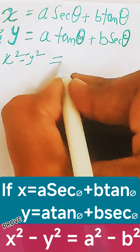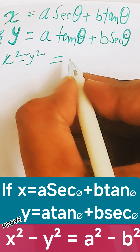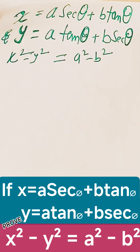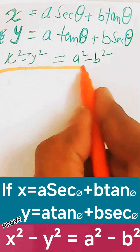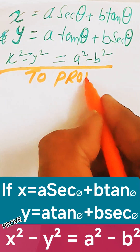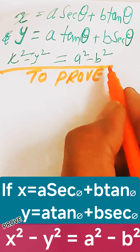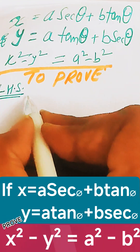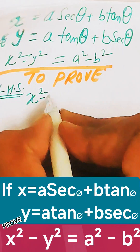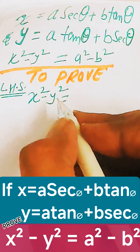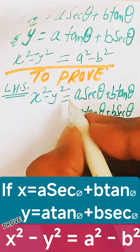We need to prove x² - y² = a² - b². To begin, take the LHS of what we need to prove, that is x² minus y².